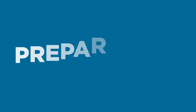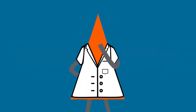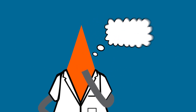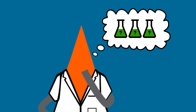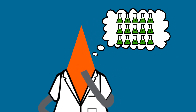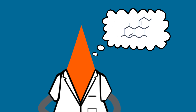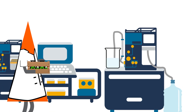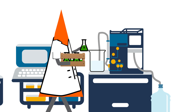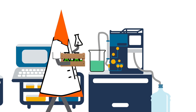In preparative chromatography, the goal is to produce as much of the sample output as possible so it can be used for further applications. You already know the substance you're seeking to separate out, and you want to churn out as much as you can as quickly as possible. Because of this, preparative chromatography typically requires a lot more of the initial compound when developing workflows.